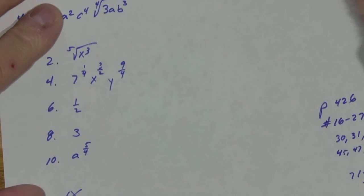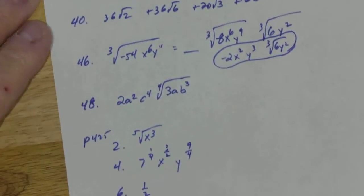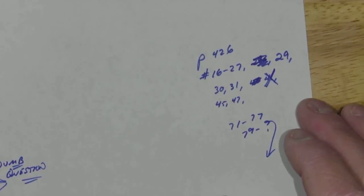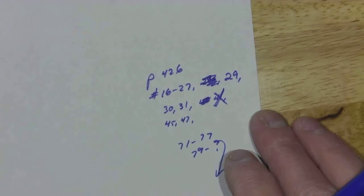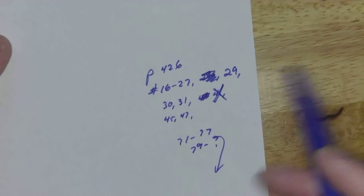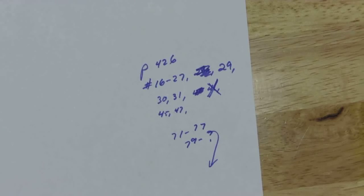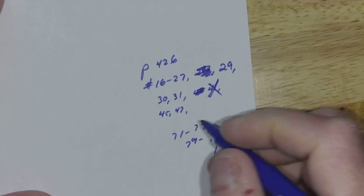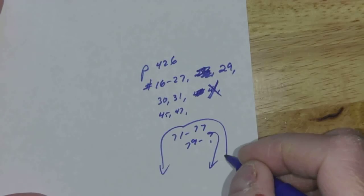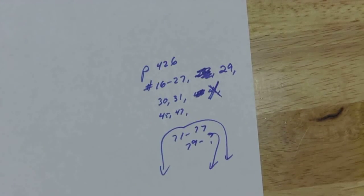So today is just going to be largely review. We've worked on this skill for a couple days. So we're going to keep it fairly short and sweet today. 4, 26, 16 through 27 all. 29, 30, 31, 45, 47. And then these, we're going to wait until tomorrow. That's what that means in my book. So we're keeping it fairly short. But stay with us. Stay with us.